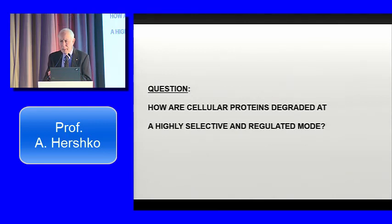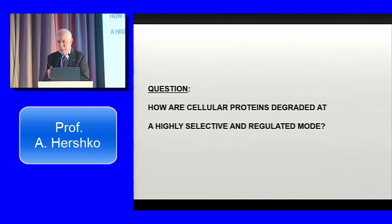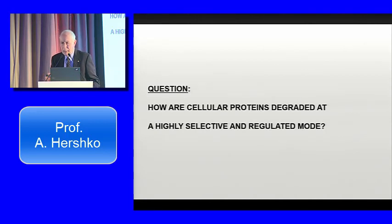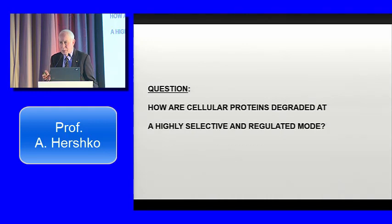I liken this to how we want to learn how a mechanical watch works. We open it up; otherwise we can only describe that it shows the time, but we don't know how it works. We take out the different parts — the springs and the wheels — examine them. When we put them back together and the watch works again, then we really understood how it works. So that's what we did. We began to biochemically dissect extracts — cells that are opened up — that carry out protein degradation. The first big advance was about 10 years later, when we isolated one important component of the system, which is called ubiquitin.